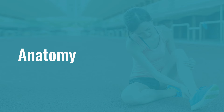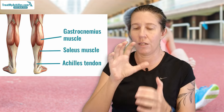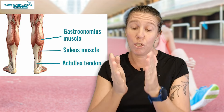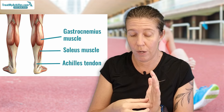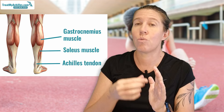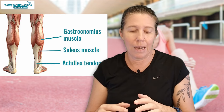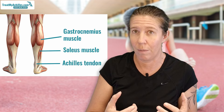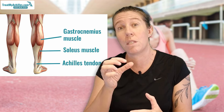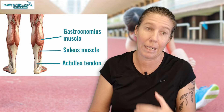So, a quick look at the anatomy. If we look at the back of the calf, you have your gastrocnemius muscle and your soleus muscle, which merge into the Achilles tendon, and then the Achilles tendon attaches onto the heel bone. There's a sheath that surrounds the Achilles tendon called the paratenon.